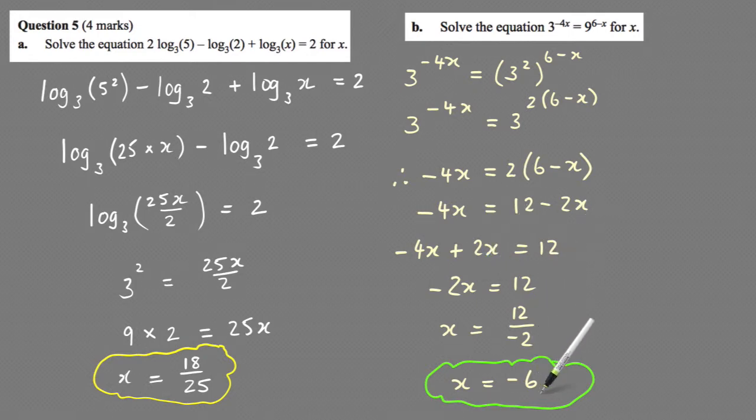Dividing 12 by minus 2, you end up with x equals minus 6. So that's how you do those two questions, just using your log and index laws.